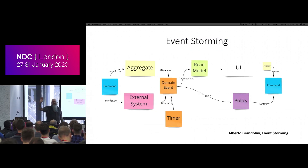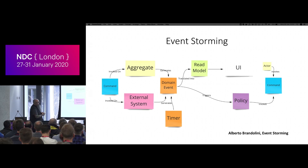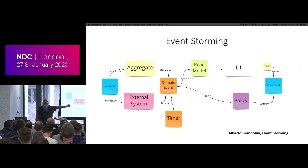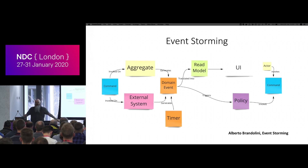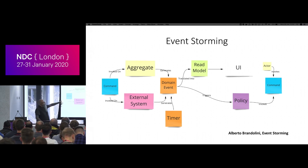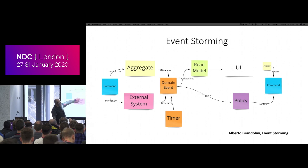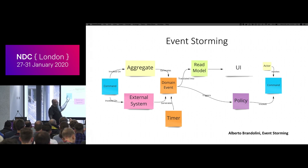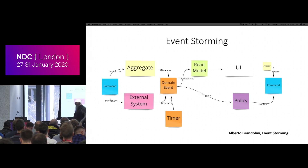Event storming is another technique — created by Alberto Brandolini out of the DDD community. His idea was to model using events, specifically domain events. The first thing you do is figure out all the events that occur in a given stream for your business. Any event is triggered either by a timer or a command, which comes into an aggregate or external system and generates that event. A command comes along and starts a transformation operation; we raise an event to show the results of that command. We can take events to create a read model for the UI, or run them through a policy and generate new events and new commands.